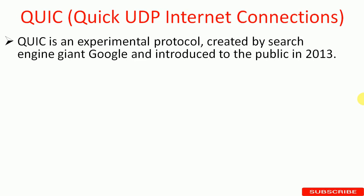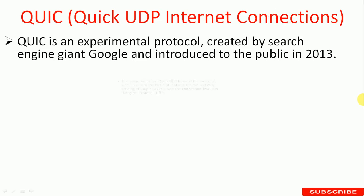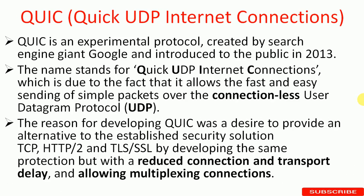QUIC is an experimental protocol created by search engine giant Google and introduced to the public in 2013. The name stands for Quick UDP Internet Connections, which is due to the fact that it allows fast and easy searching of simple packets over the connectionless User Datagram Protocol (UDP). The reason for developing QUIC was to provide an alternative to the established security solution of TCP, HTTP/2, and TLS/SSL, providing the same protection but with reduced connection and transport delay and allowing multiplexing connections.